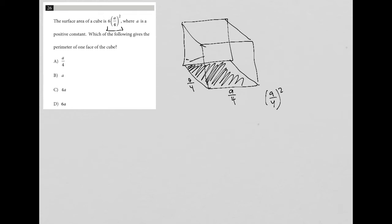And then, of course, each of these other squares would also have that same exact area, all adding up together to give me the 6 times a to the fourth, I'm sorry, a over 4 squared. So the surface area of a cube is 6 times a over 4 squared, where a is a positive constant.